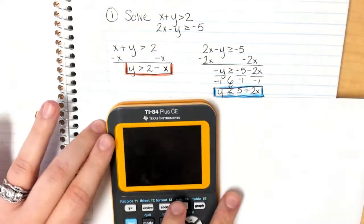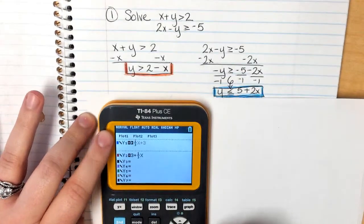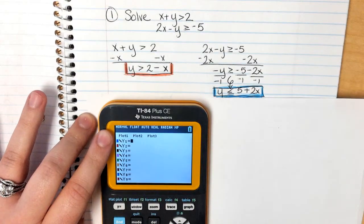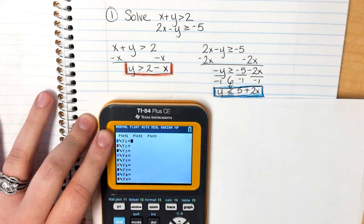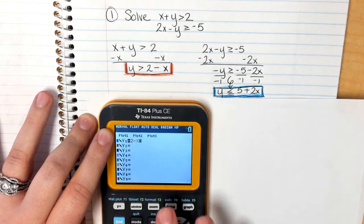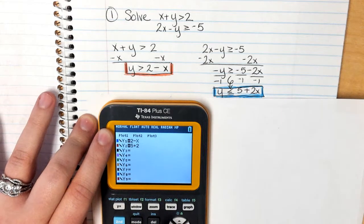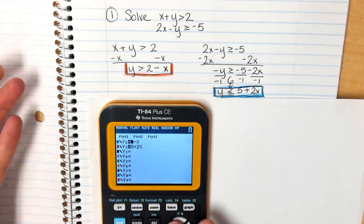Now in class I showed you how to graph on your calculator, and we're going to do that here as well. So we're going to go into y equals. These two right here, you type them in just like normal. So 2 minus x, and this guy is 5 plus 2x. Nothing different here.